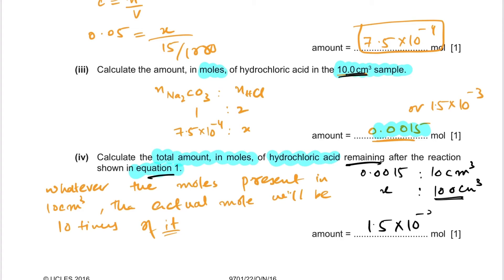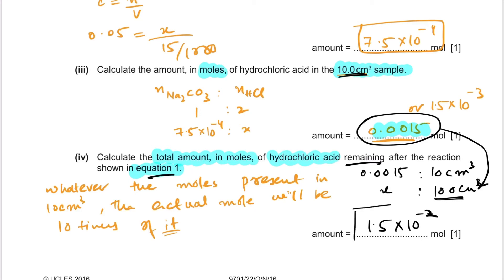To summarize: we calculated moles of HCl in the 10 cm³ sample taken from the volumetric flask. All remaining HCl from reaction 1 is present in the full 100 cm³ flask. Since 10 cm³ is one-tenth of 100 cm³, the total moles of HCl remaining = 10 × 1.5×10⁻³ = 1.5×10⁻² mol.